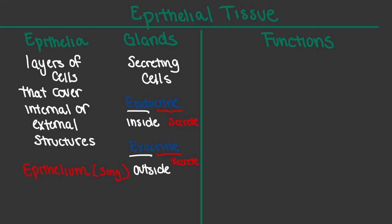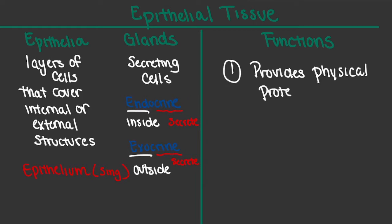As we've talked about epithelial tissue, the next thing we need to do is give attention to its three primary functions. The first of these functions is that epithelial tissue helps to provide physical protection for the body. The epithelial tissue protects our body surfaces both internally and externally — specifically from things like abrasions and dehydration, among many other things.